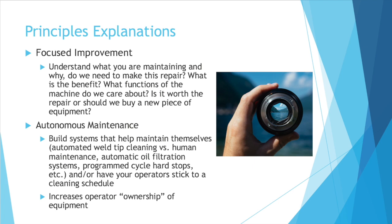Next, we have autonomous maintenance — building systems that help maintain themselves. For example, you can have automated weld tip cleaning versus human maintenance. I worked in a weld facility where people had to clean the weld tips, and sometimes people would forget or wouldn't do the best job, which allowed dirt to get into the whole factory more often.